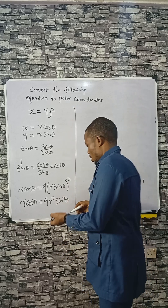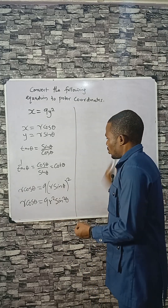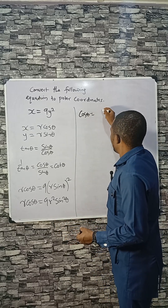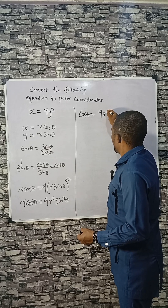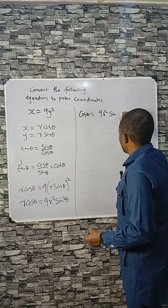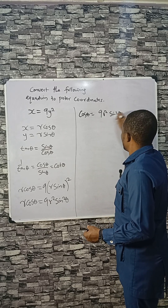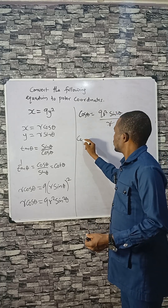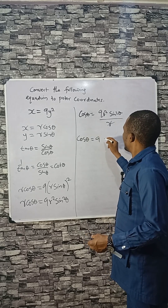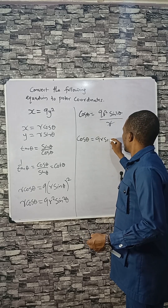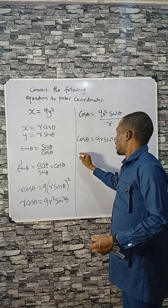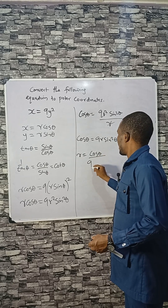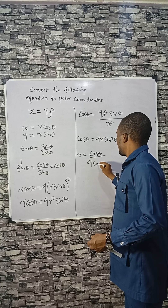If we isolate cosθ on one side, we get cosθ equals 9R² sin²θ divided by R, which cancels one R. So cosθ equals 9R sin²θ, and therefore R equals cosθ divided by 9 sin²θ.